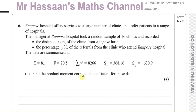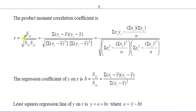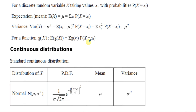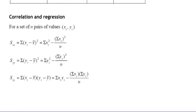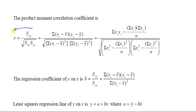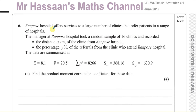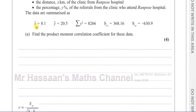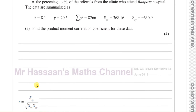To find the value of R, we quickly turn to the formula sheet. The formula sheet gives us the product moment correlation coefficient formula. What we're interested in is a specific part of that formula. I already have it here ready for us.